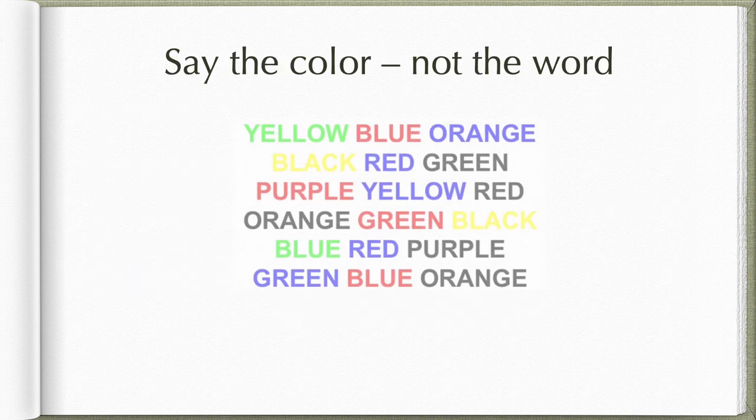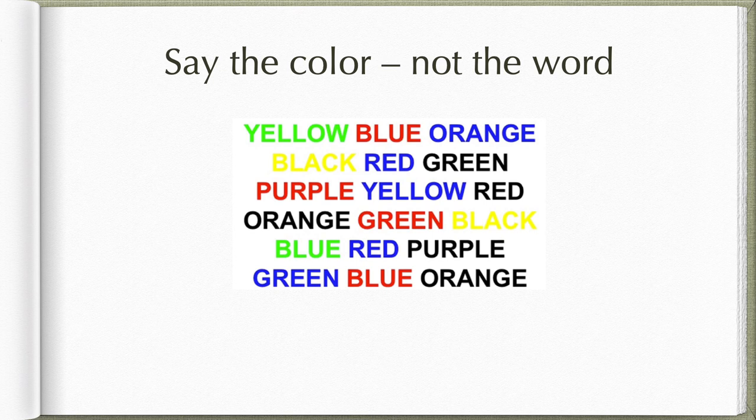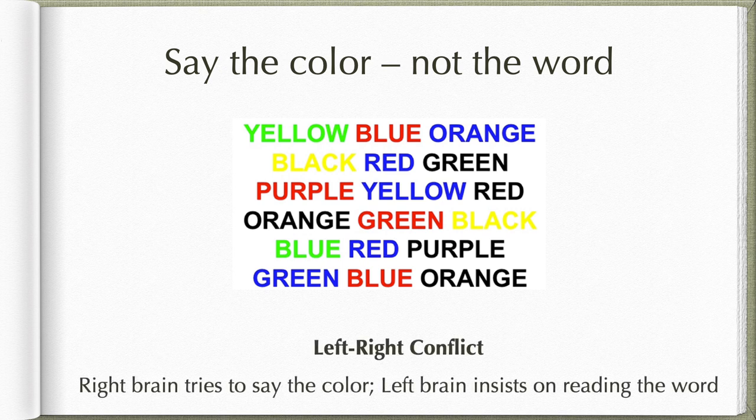Just follow this simple instruction: there are multiple words written here using different font colors — just say the color of the font, not the word itself. This is one very simple exercise which establishes left-right conflict. The right brain tries to say the color of the word, whereas the left brain insists on reading the word.